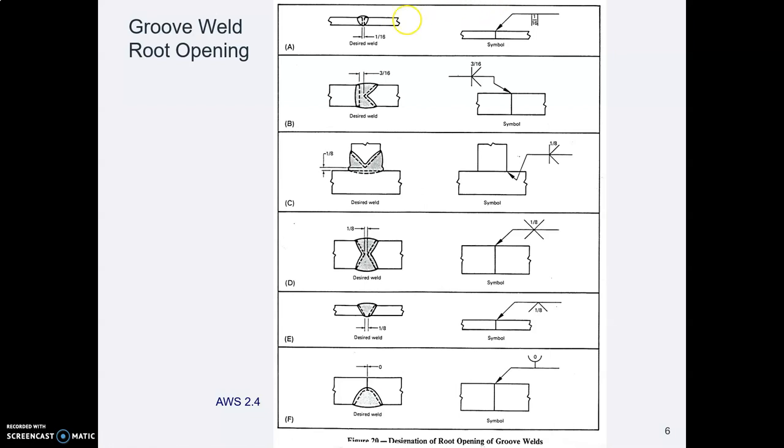And where do you call that out on the symbol? You put it in the middle of the symbol lines. So in here means root opening. It means how far apart are those plates.